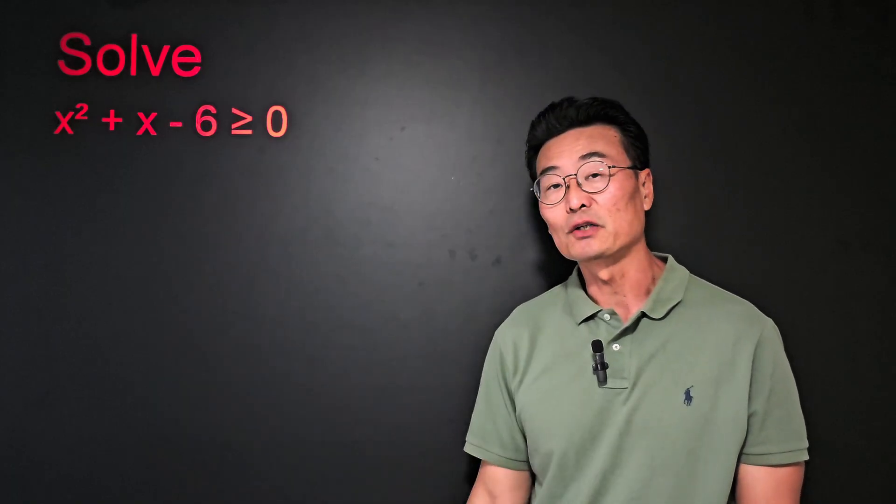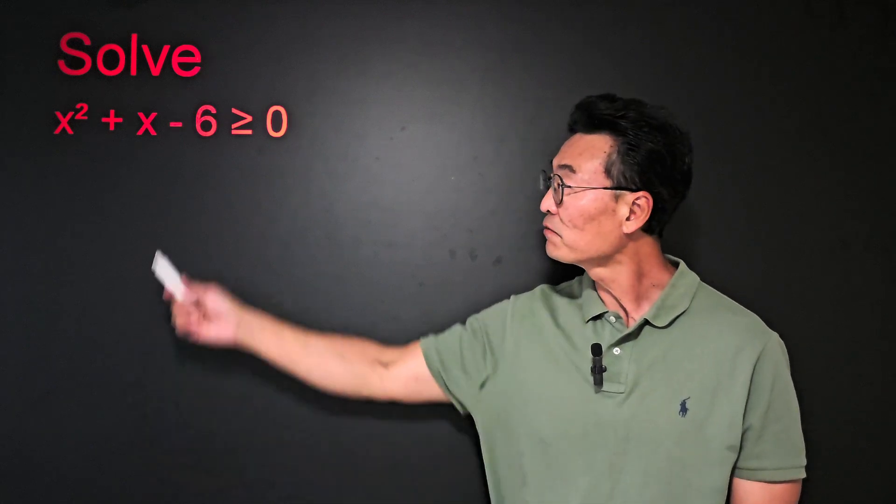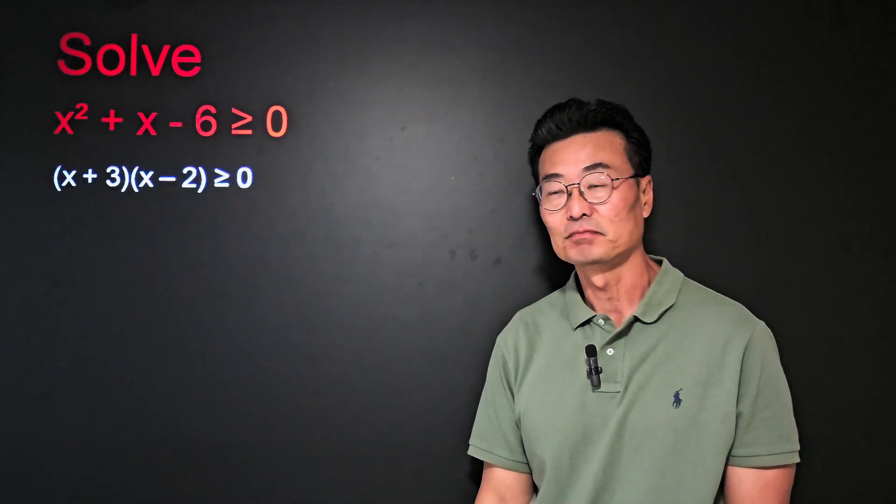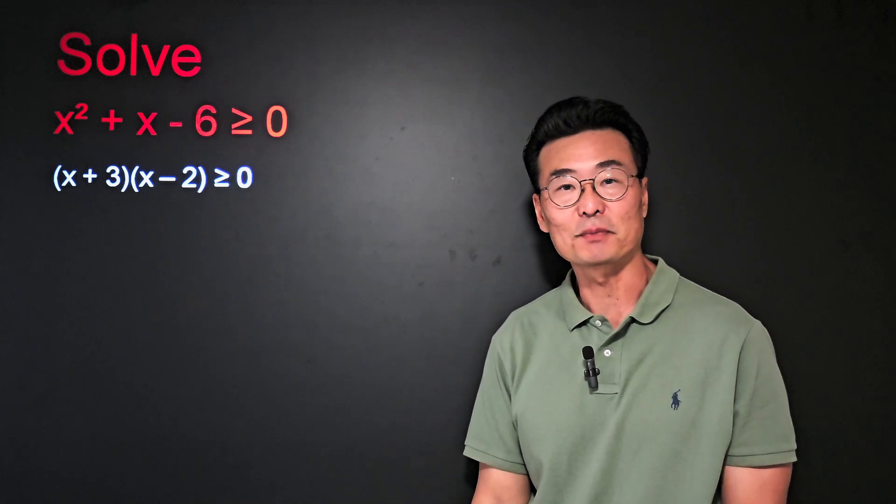In order to solve this quadratic inequality, what I like to do is go ahead and factor the left side first, where we get x plus 3 times x minus 2.